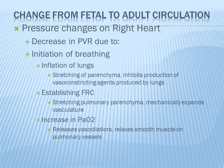Once the first breath is taken, pressure changes begin on the right side of the heart and pulmonary vascular resistance decreases. As the baby takes its first breath and inflates the lungs, stretching the parenchyma inhibits production of vasoconstricting agents and mechanically expands the vasculature. It also establishes the FRC and increases PaO2. Increasing PaO2 causes release of vasodilators, which relax smooth muscle on the pulmonary vessels, all helping to decrease pulmonary vascular resistance.